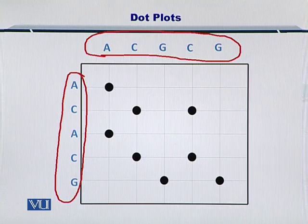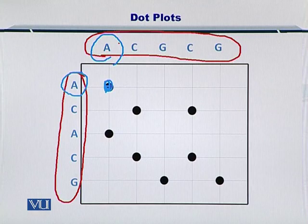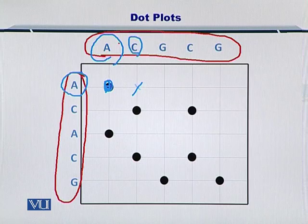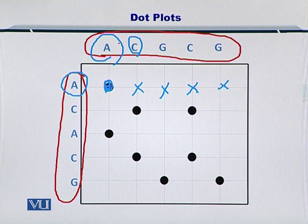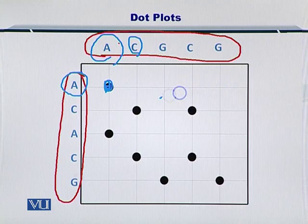As you can see, A matches with A, so you can place a dot here. C does not match an A. G does not match an A, and so on and so forth. You did not insert a dot on any of these positions.